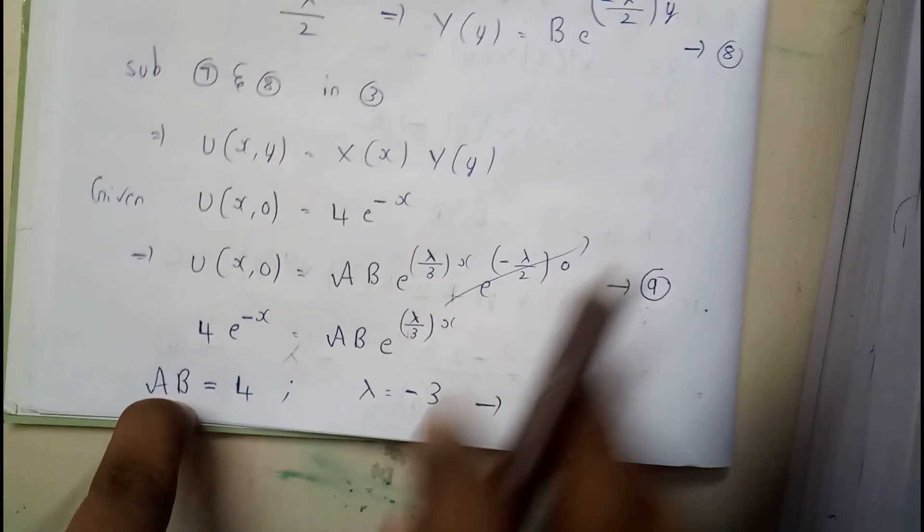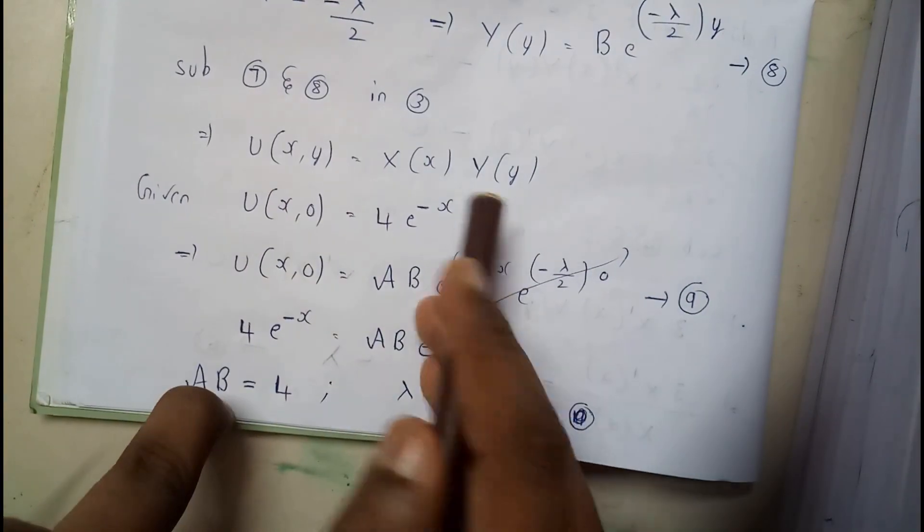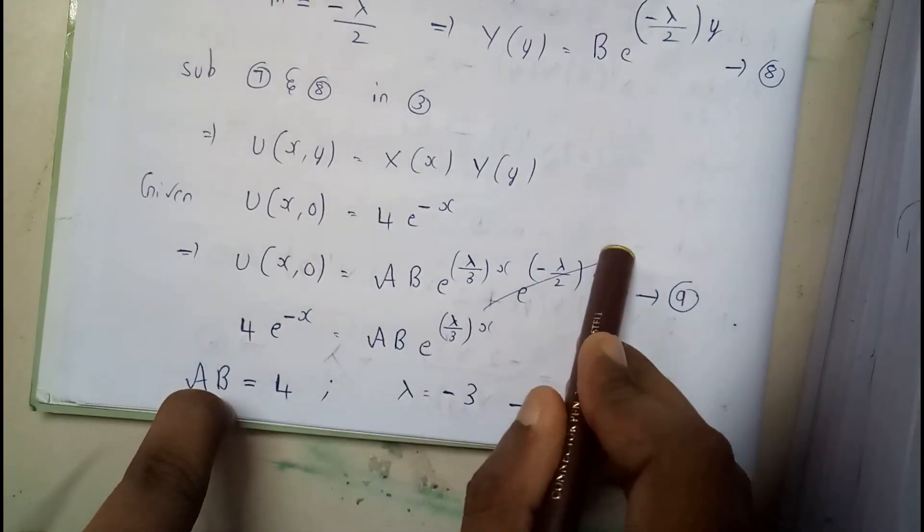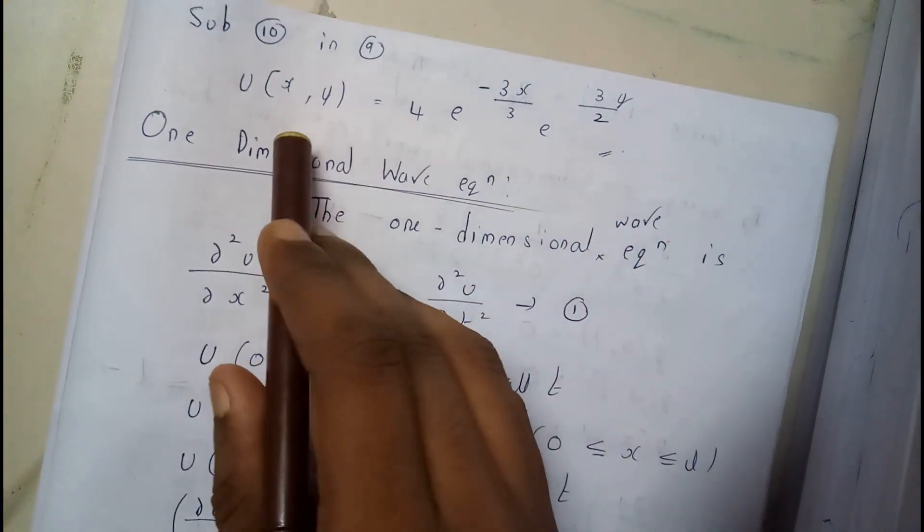From this, substitute these values in that equation with t. Once I substitute, I just got this equation.